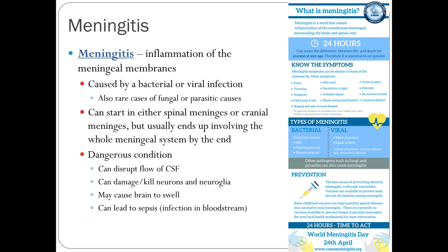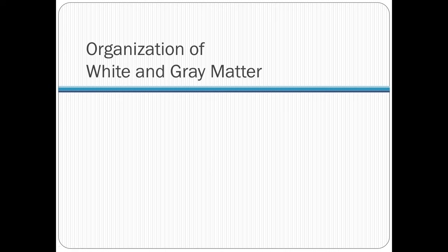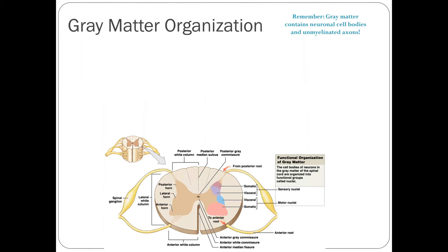Now we'll look at the organization of white and gray matter in the spinal cord. As a reminder, gray matter contains neuronal cell bodies and unmyelinated axons. In cross-section, the gray matter of the spinal cord forms an H or butterfly shape in the middle.